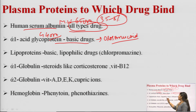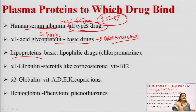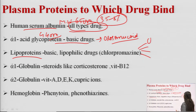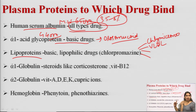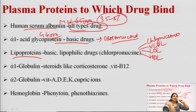The third type of plasma protein is lipoprotein, in which drugs dissolve into the lipid core of the lipoprotein molecule. There are four types of lipoproteins: chylomicrons, VLDL (very low density lipoprotein), LDL (low density lipoprotein), and HDL (high density lipoprotein). Mainly basic and lipophilic drugs — for example, chlorpromazine — can bind to these lipoproteins.